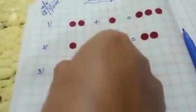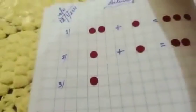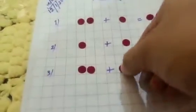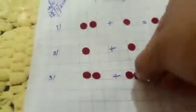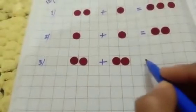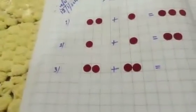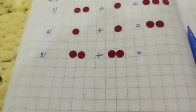Now number three. Here I am putting two bindi, here I am putting two bindi, then I am giving here plus sign. Here again one, two, then I am putting equal sign. Then how many bindis are there?